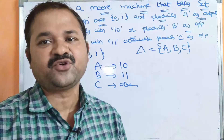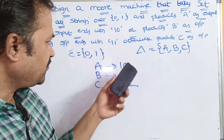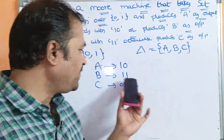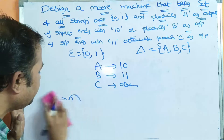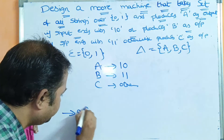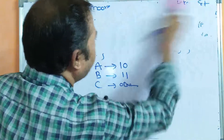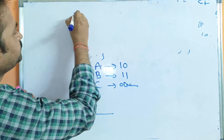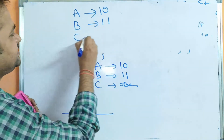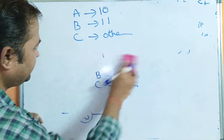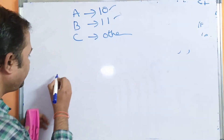A Moore machine is nothing but a DFA only, but here each state has some output. The strings 1,0 and 1,1 each contain 2 letters. So we require 2 plus 1, that is 3 states. Now let us draw the diagram.